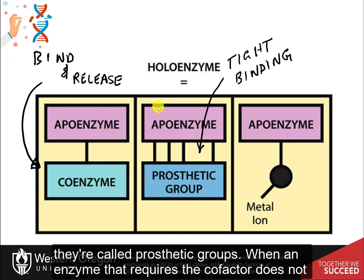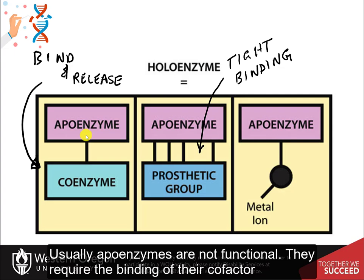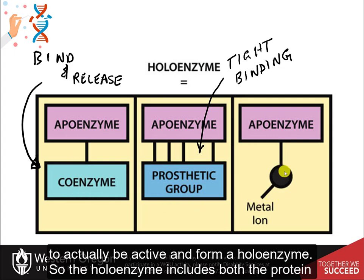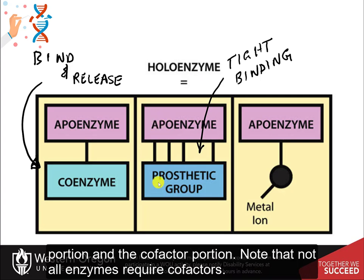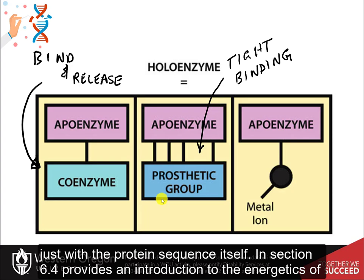When an enzyme that requires a cofactor does not contain its cofactor, it is called the apoenzyme — without the enzyme cofactor. Apoenzymes are not functional; they require the binding of their cofactor to actually be active and form the holoenzyme. The holoenzyme includes both the protein portion and the cofactor portion. Note that not all enzymes require cofactors — some work independently with just the protein sequence itself.